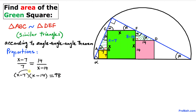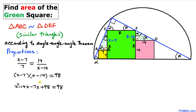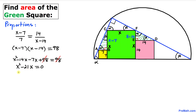Using double distribution to expand: x squared minus 14x minus 7x plus 98 equals 98. We can see that 98 and 98 cancel each other out, leaving us with x squared minus 21x equals 0. We can see that x can be factored out, giving x times (x minus 21) equals 0.